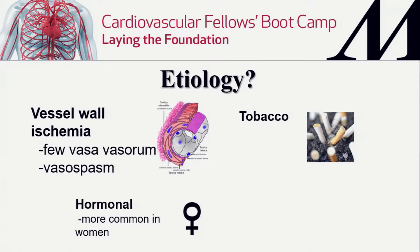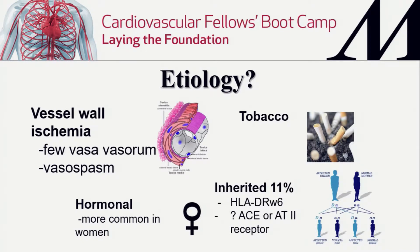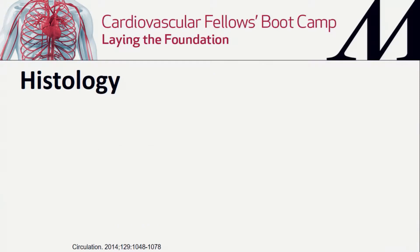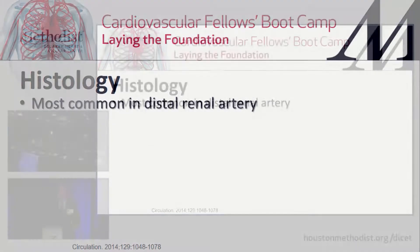There's also an association with cigarettes. There is a hormonal theory, since about two-thirds to 70% of patients are female. Finally, there's an inherited component — associations have been found with HLA-DRW6 and potential polymorphisms in the angiotensin-converting enzyme and angiotensin-2 receptors. However, nothing has been definitively nailed down.